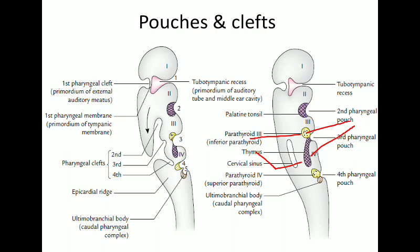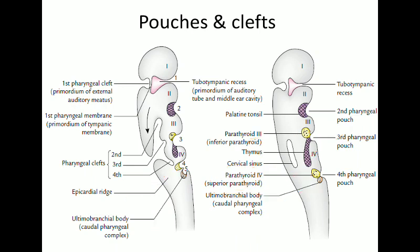Coming to the fourth pouch — it also has a dorsal wing and a ventral wing. The dorsal wing forms the superior parathyroid, also called parathyroid 4, because it develops from the fourth pouch. The ventral wing forms the ultimobranchial body, also called the caudal pharyngeal complex. According to some authors, the remaining part of the fifth pouch fuses with the fourth pharyngeal pouch to form this ultimobranchial body. This ultimobranchial body forms the parafollicular cells, or C cells, of the thyroid gland.